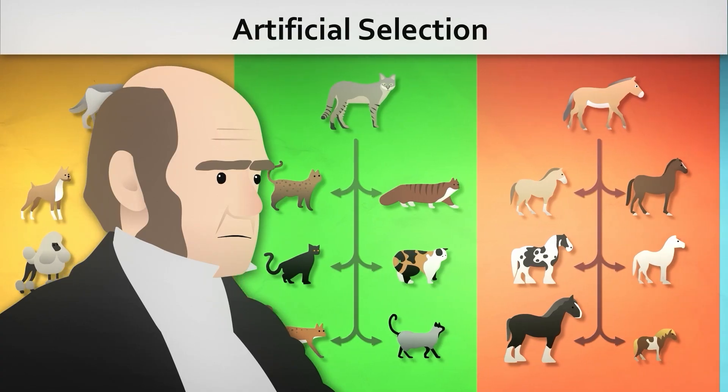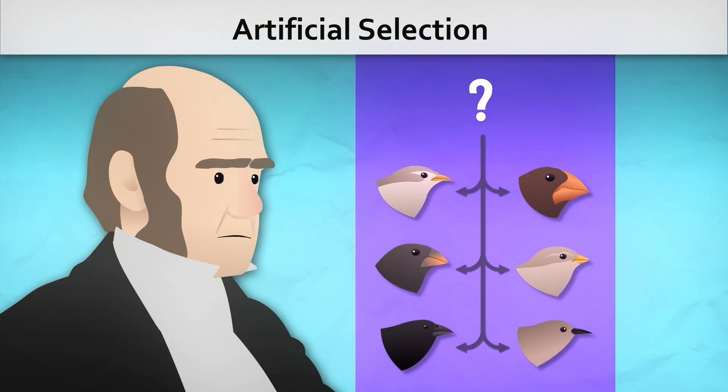Darwin proposed that a similar process occurs in nature, but instead of humans selecting the traits that will be inherited, nature itself does so. This is natural selection.